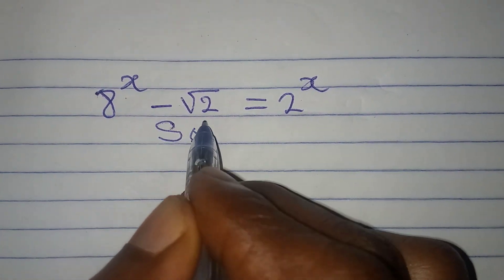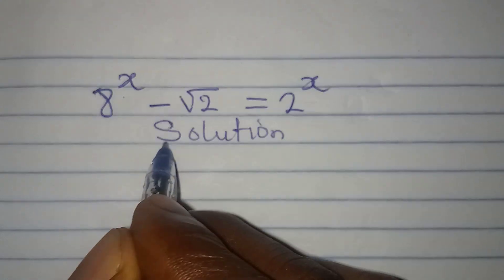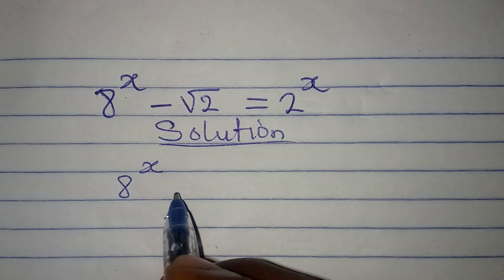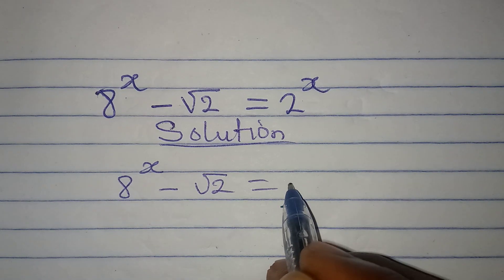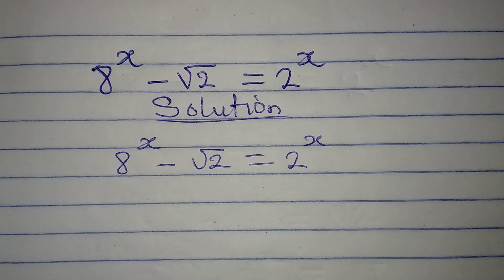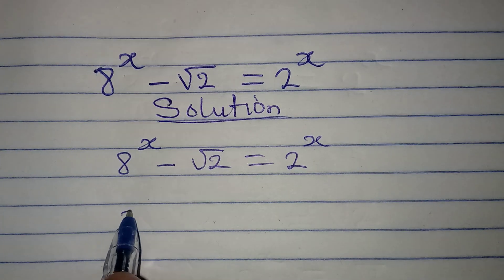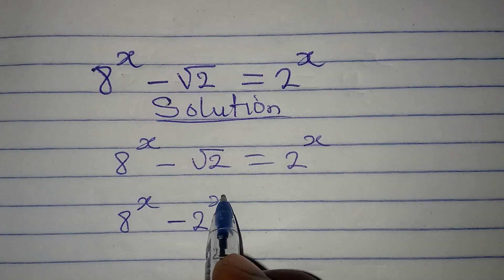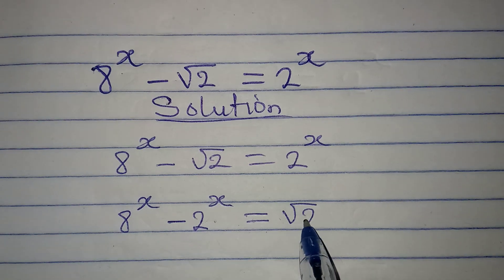Hello everyone, let's solve this problem very quickly. We have 8 to the power of x minus square root of 2, equal to 2 to the power of x. The first step I will take is to bring the x terms together, so I have 8 to the power of x minus 2 to the power of x, and this should be equal to square root of 2.